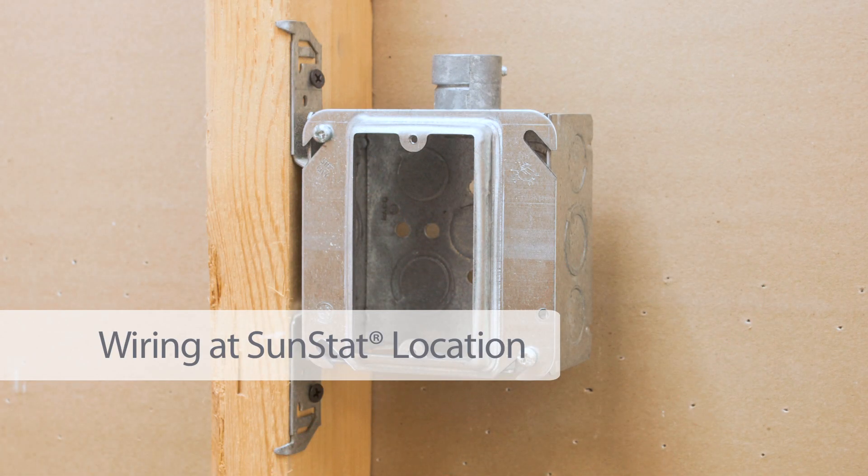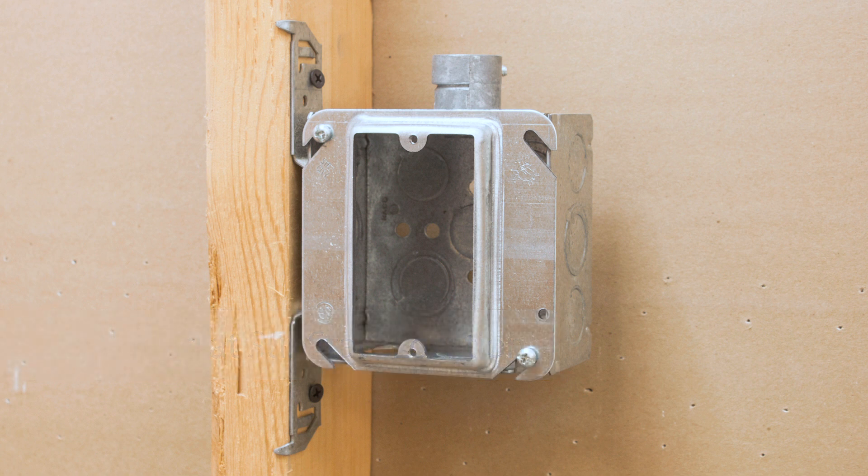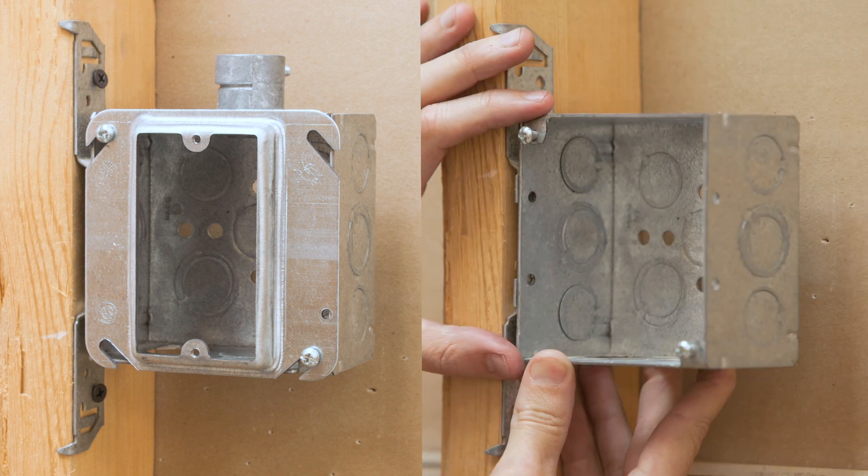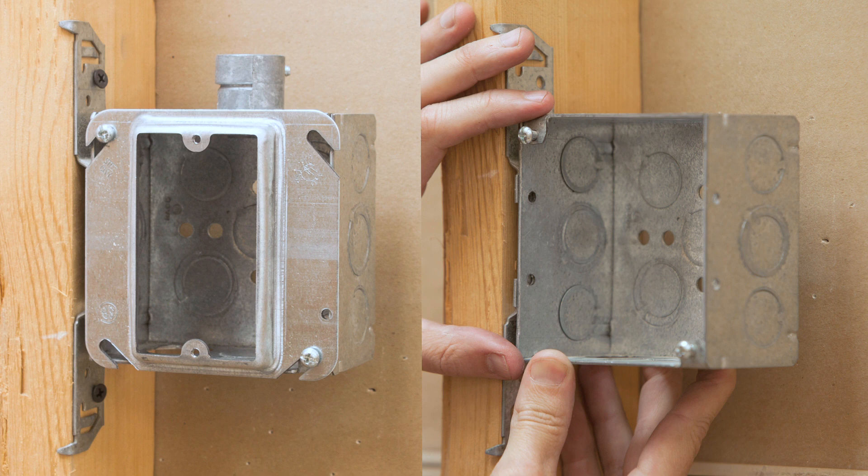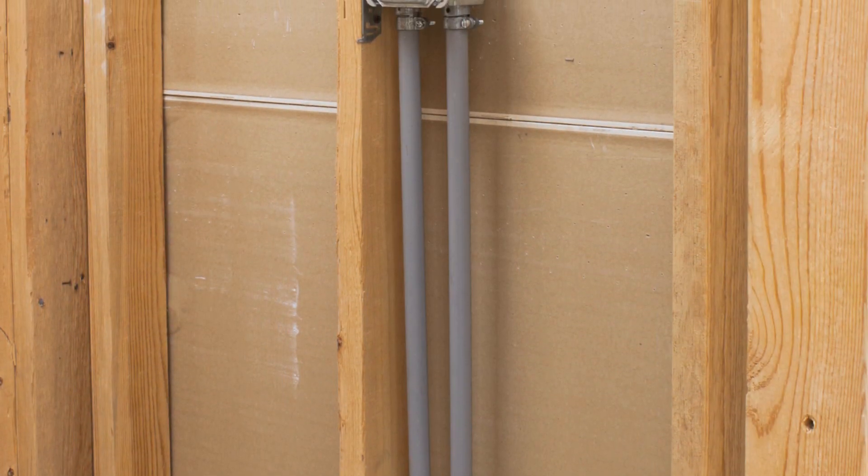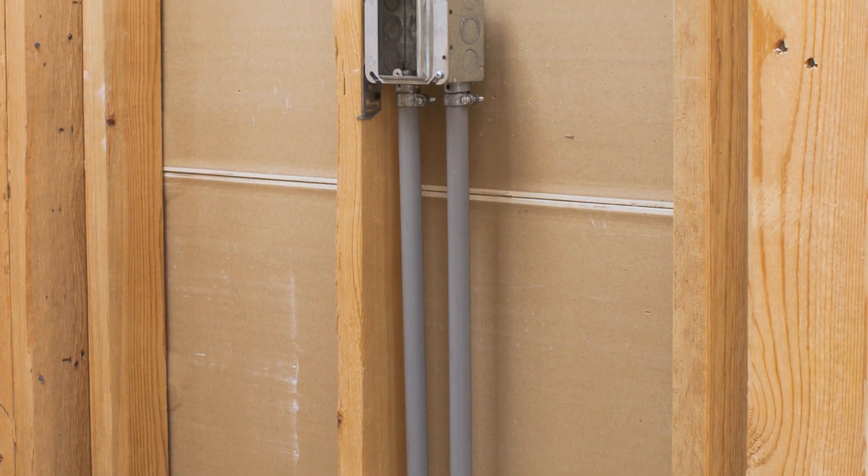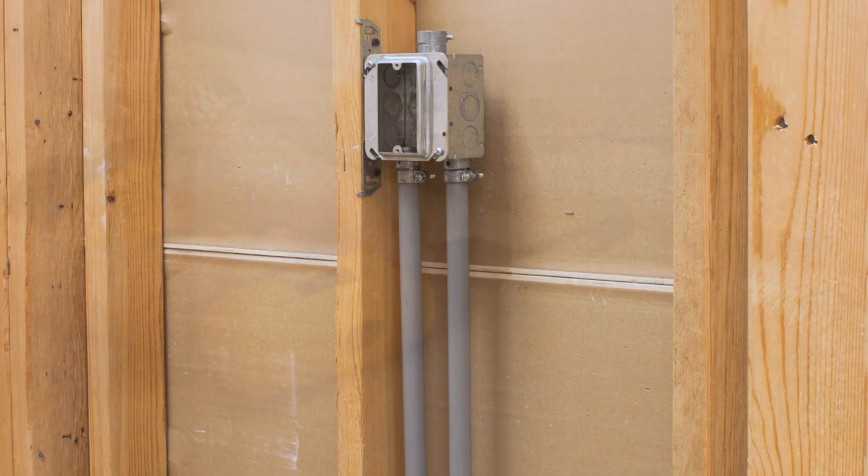Select the thermostat location and have your electrician install the appropriate electrical box. Make sure it's large enough to meet the box fill requirements of your local code. An extra deep box or a 4 by 4 inch deep box with a mud ring are commonly used. Conduit may be required to protect the wiring from potential damage through the wall. Consult your local code.